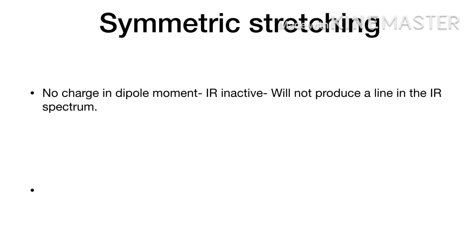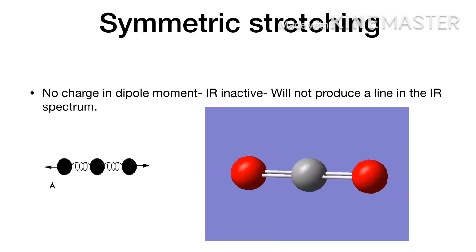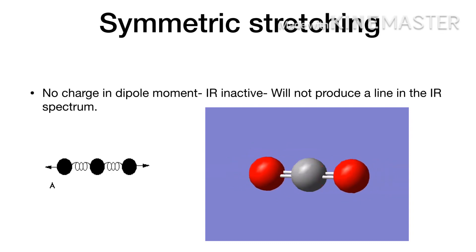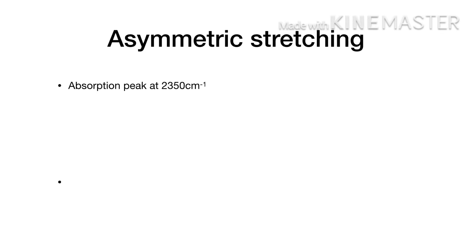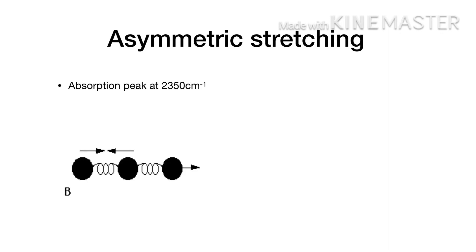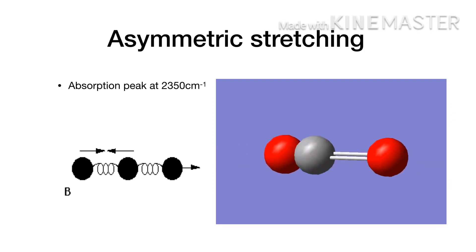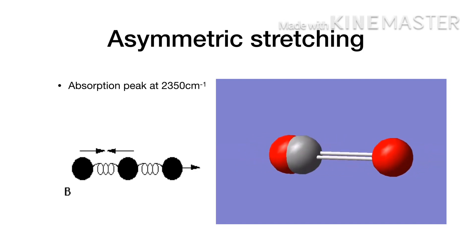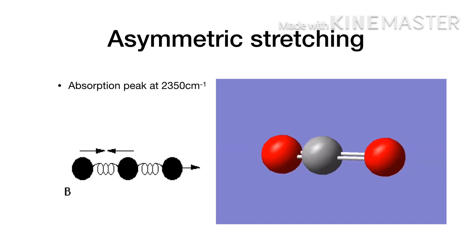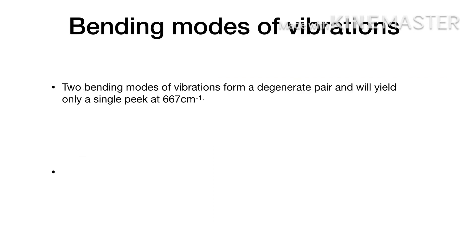The first mode is symmetric stretching. During symmetric stretching there is no change in dipole moment; hence this vibration is IR inactive and will not produce a line in the IR spectrum. The next mode is asymmetric stretching. During asymmetric stretching, one bond contracts and the other bond elongates, so there is a change in dipole moment. Hence this vibration is IR active and gives a line at 2350 cm⁻¹.